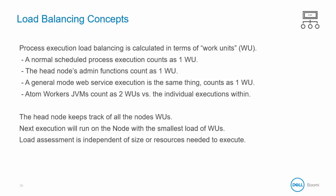A normal scheduled process execution counts as one work unit, no matter the size or document count of the execution. The head node of the cluster has some administrative functions that it has to take care of, so it counts as one work unit as well. A general mode web service execution like an inbound web request counts as one work unit. An atom worker, which we will cover in later slides, counts as two work units.